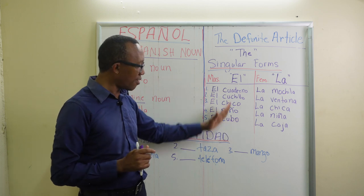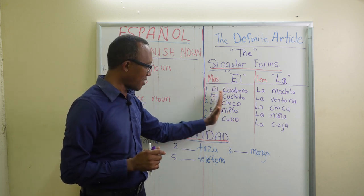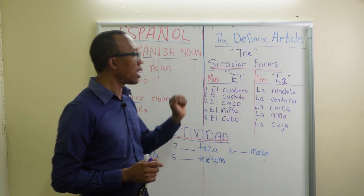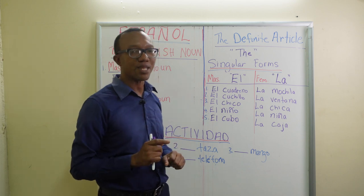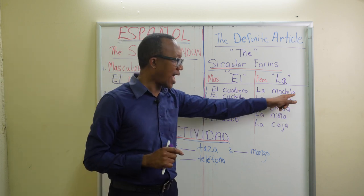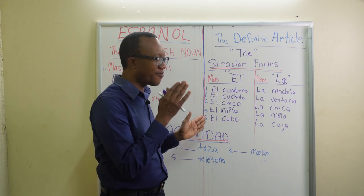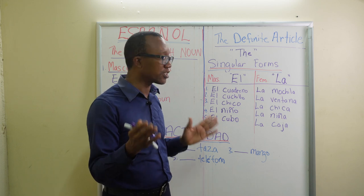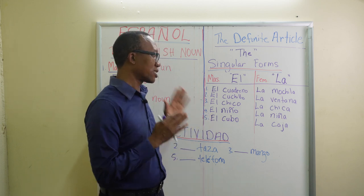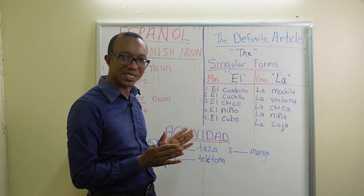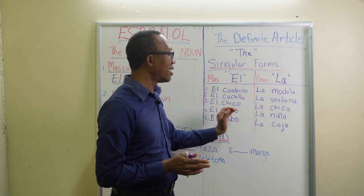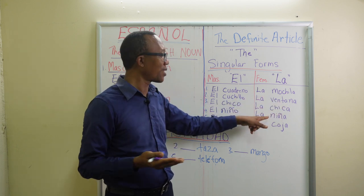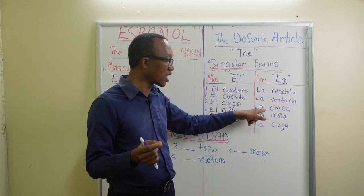All of those masculine nouns end in 'o' and go with 'el.' Now for the feminine form: 'la mochila.' Agreement is very often apparent in Spanish, but there are exceptions. That is why we start with the general, standard pattern.